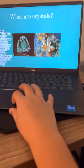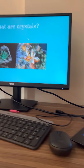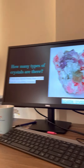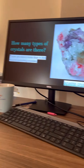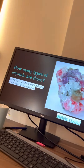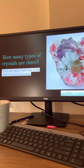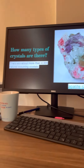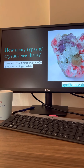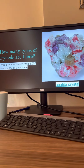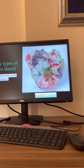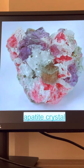Here as you can see, this is a crystal — it's really beautiful. Do you know how many types of crystals there are? There are about more than 4,000 naturally occurring crystals. And as you can see in the picture, this is an apatite crystal.